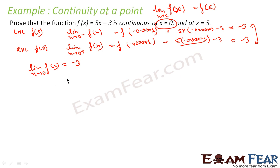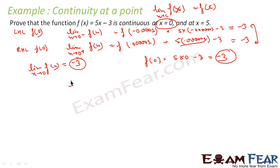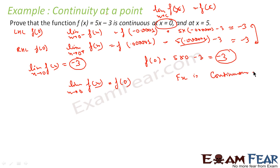The next step is to check whether this limit equals f(c), where c = 0, that is f(0). f(0) = 5(0) − 3 = −3. Both values are equal: the limit as x tends to 0 of f(x) equals f(0) = −3. Thus the function is continuous at x = 0. We can 100% confirm that this function is continuous at x = 0, even if it might be discontinuous at other points.